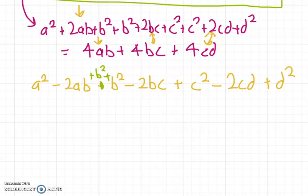Now, if we have a look at a² - 2ab + b², we can see that we can factorize it as (a-b)². And also we have b² - 2bc + c² here, and we can also factorize this as (b-c)².